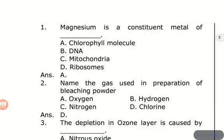The fourth question is: magnesium is a constituent metal of dash. Options are: chlorophyll molecule, DNA, mitochondria, ribosome. The answer is A, chlorophyll molecule. Magnesium is the metal of chlorophyll molecule.